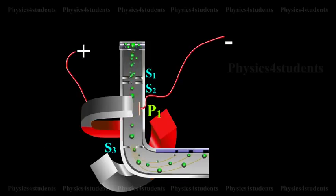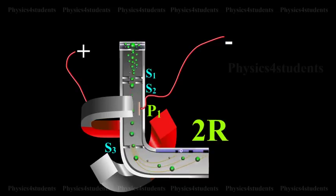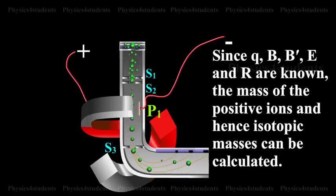Ions with different masses trace semi-circular paths of different radii and produce dark lines on the plate. The distance between the opening of the chamber and the position of the dark line gives the diameter 2R from which radius R can be calculated. Since Q, B, B', E and R are known, the mass of the positive ions and hence the isotopic masses can be calculated.